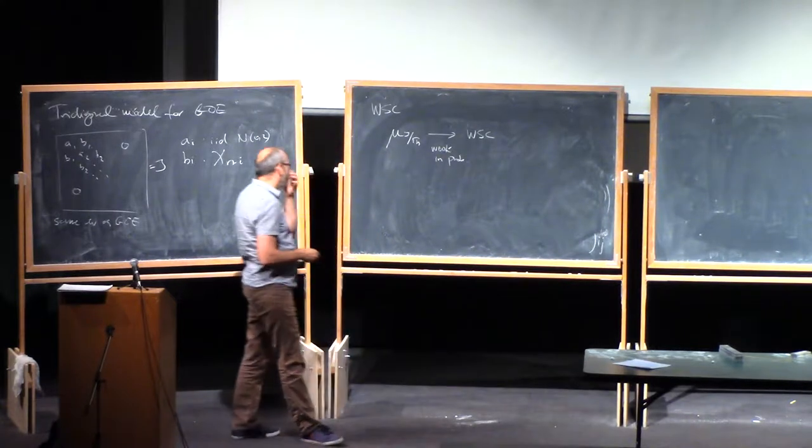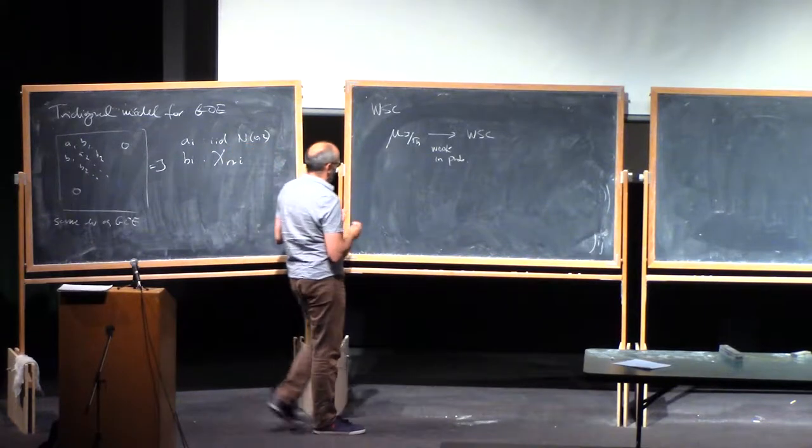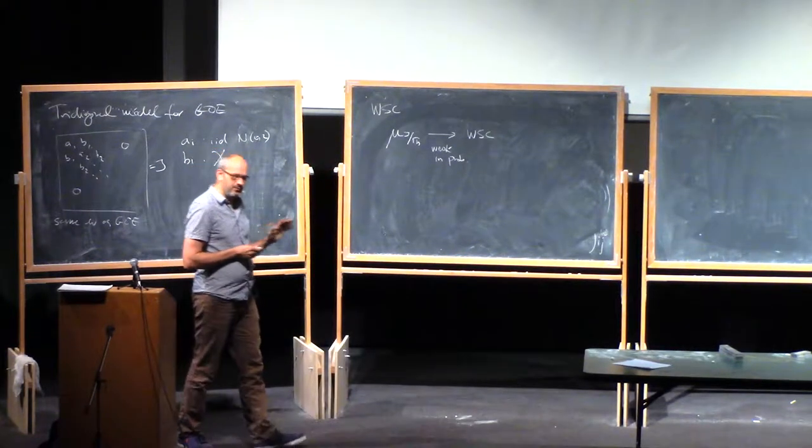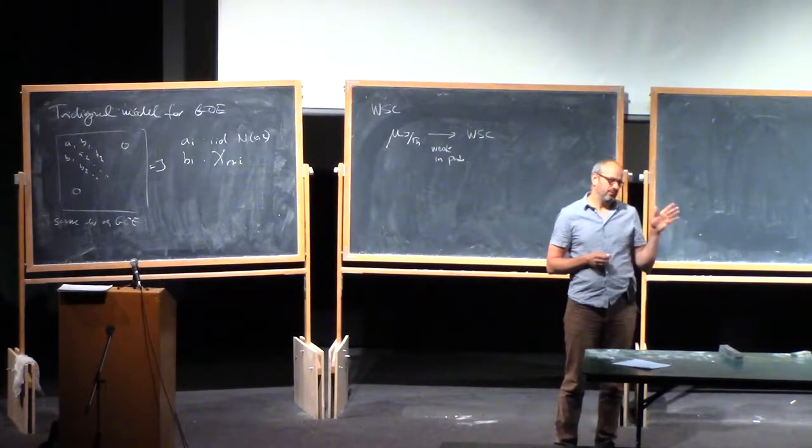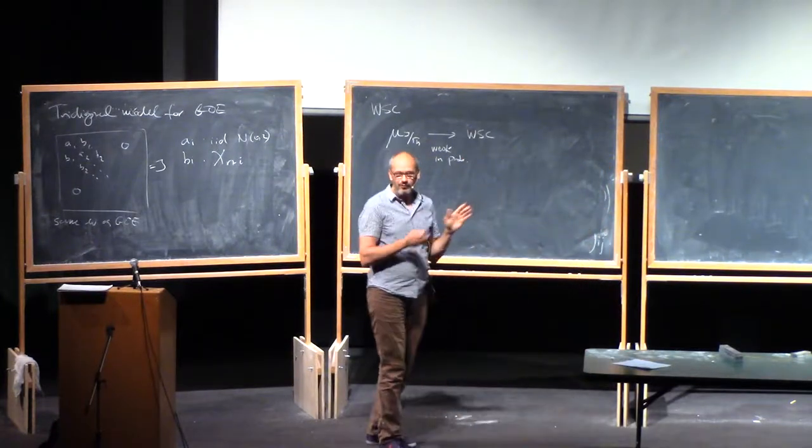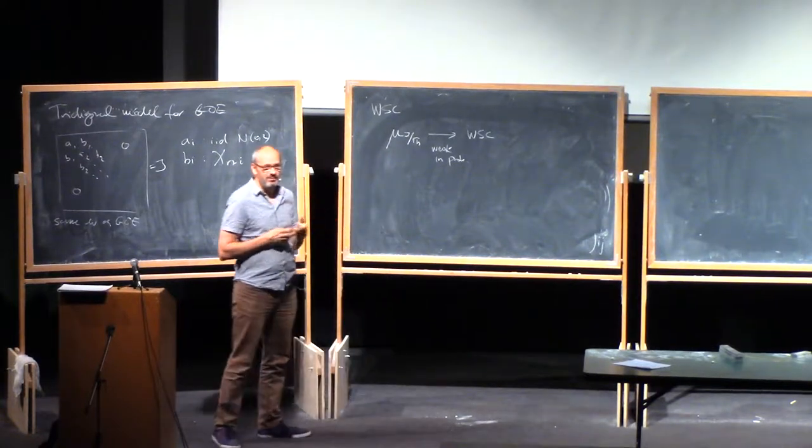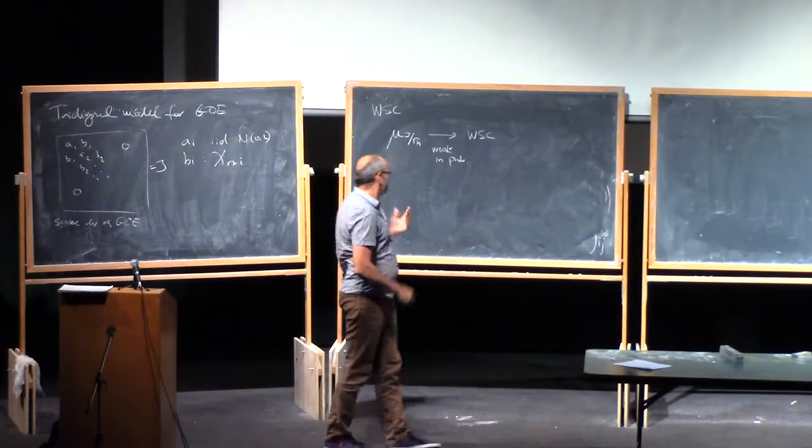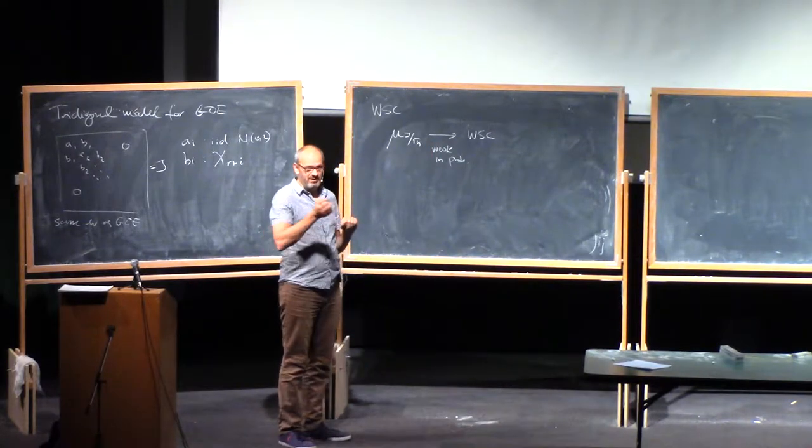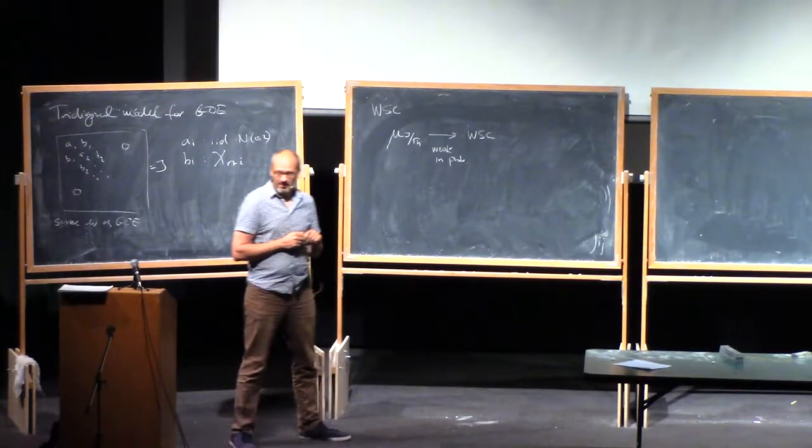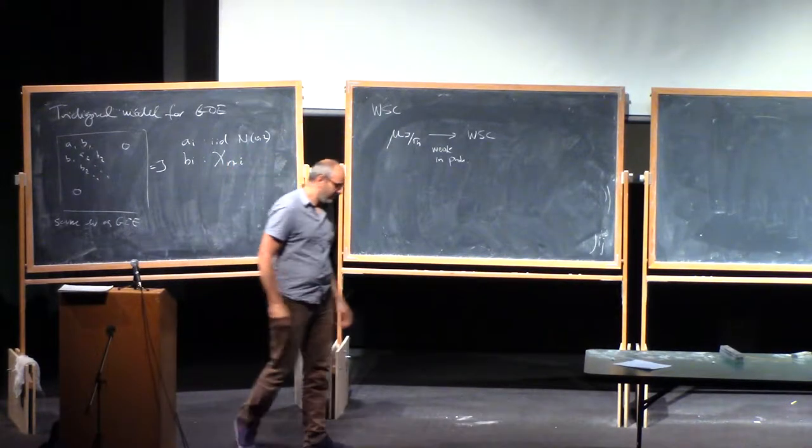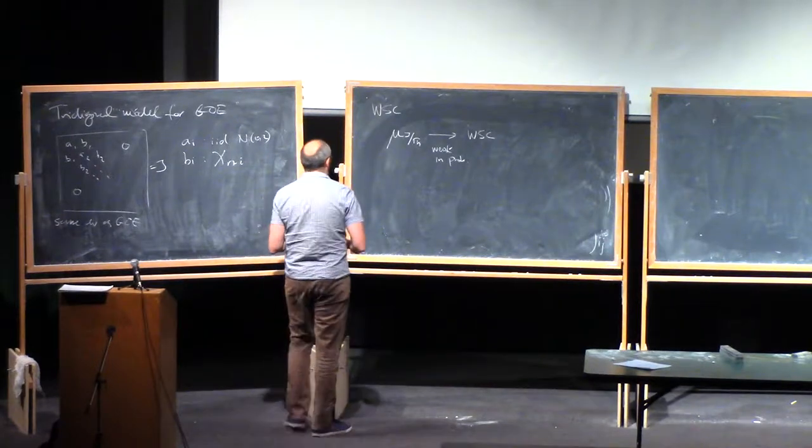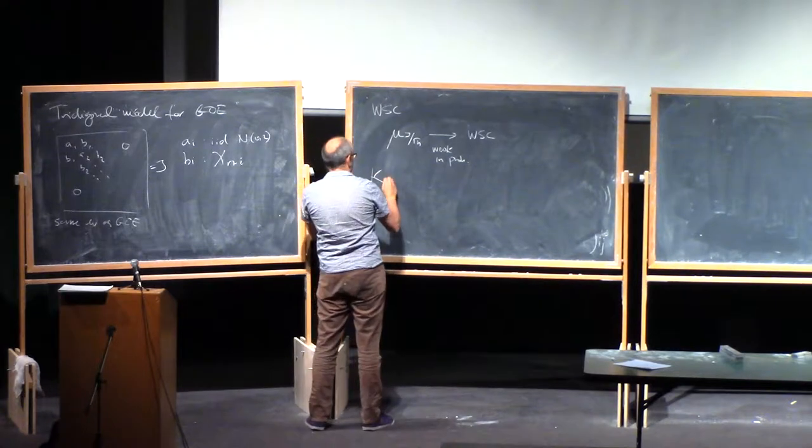So the first result that we can prove here is about the top eigenvalue. If you have this GOE, you know that the eigenvalue distribution converges to the Wigner semicircle law. And that kind of tells you that the top eigenvalue has to be on the top edge of the Wigner semicircle law. Or it could also be above, because this is a convergence in distribution. So this is, you know, the first was proved by Komlós and Fürédi. It's an old classical result.